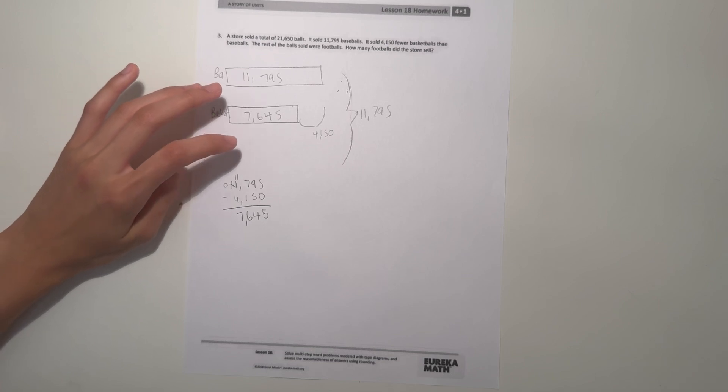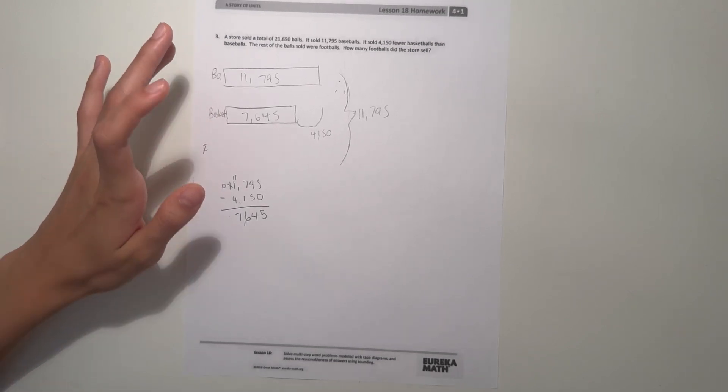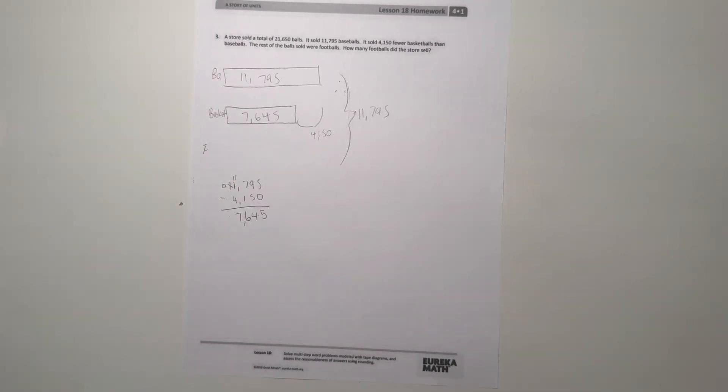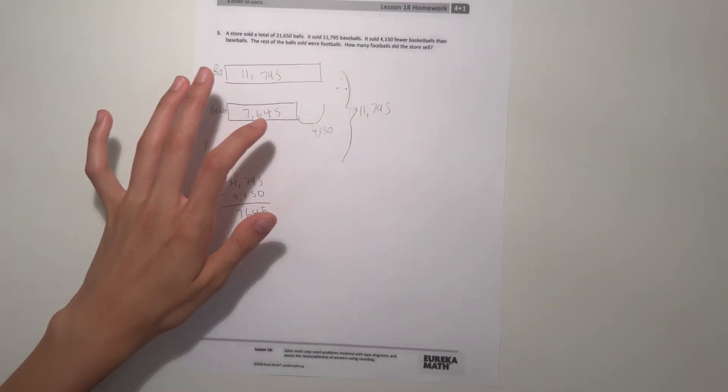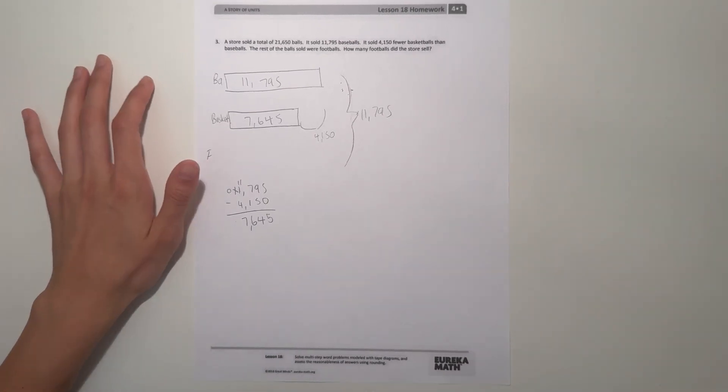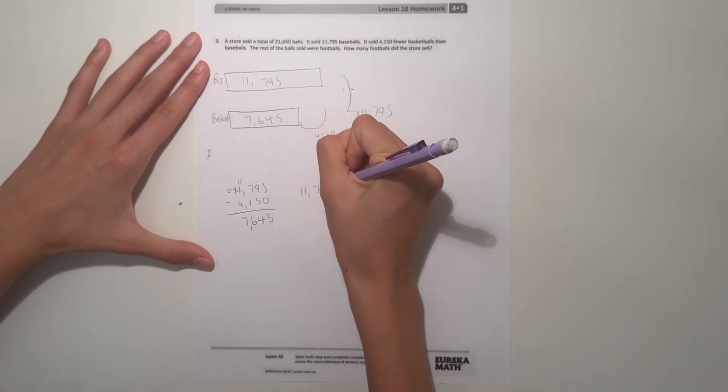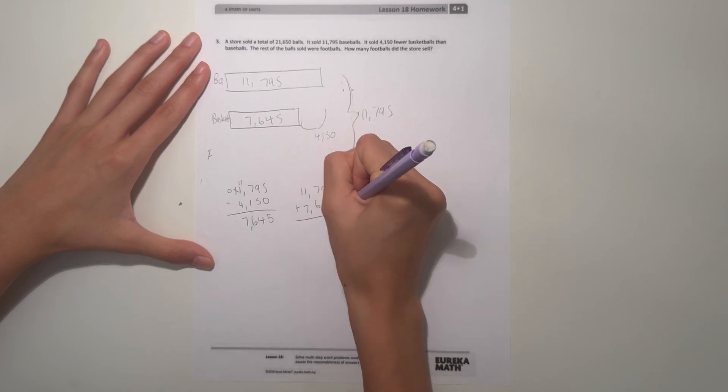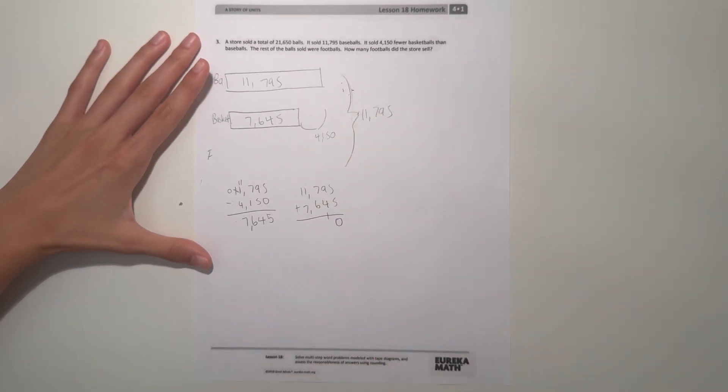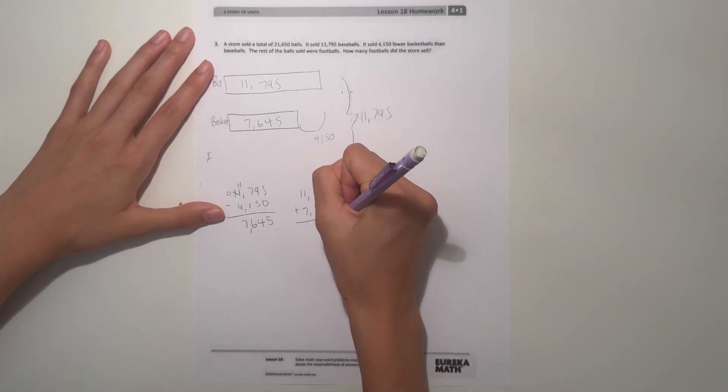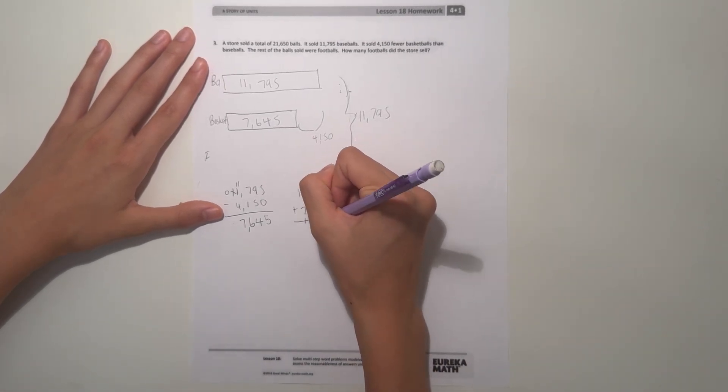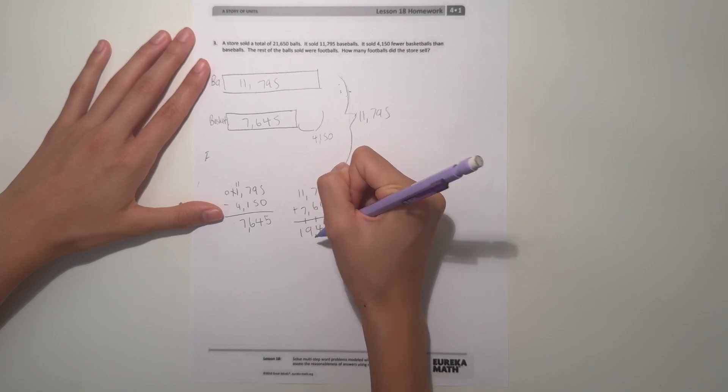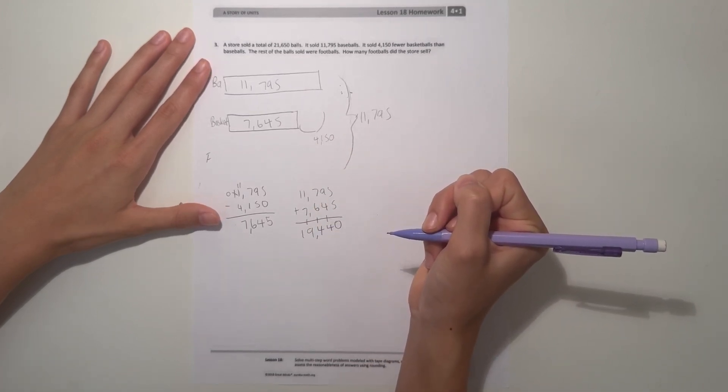Now to find out footballs, we know the rest are footballs. But since we know how many baseballs and basketballs they sold, we can add that up and then subtract from the total to find how many are footballs. Let's see: 11,795 plus 7,645. 5 plus 5 is 10, 9 plus 4 is 13 plus 1 is 14, 7 plus 6 is 13 plus 1 is 14, 1 plus 7 is 8 plus 1 is 9, and 1 just leave it as 1.